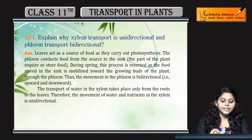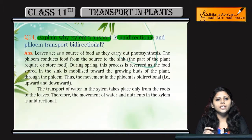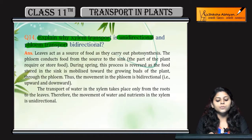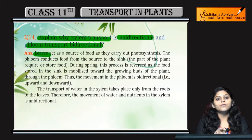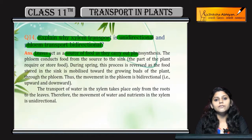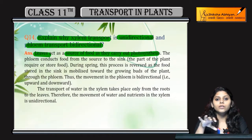Question number 14: Explain why xylem transport is unidirectional — unidirectional means one directional — and phloem transport is bidirectional — bi means two directional. Leaves act as a source of food because they carry out photosynthesis, which means they make their own food for the plant.